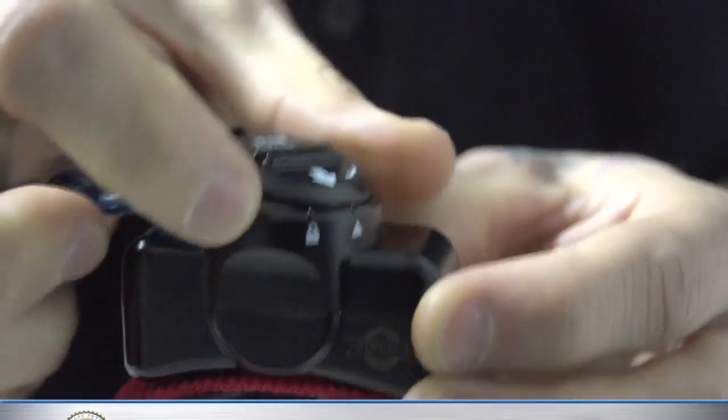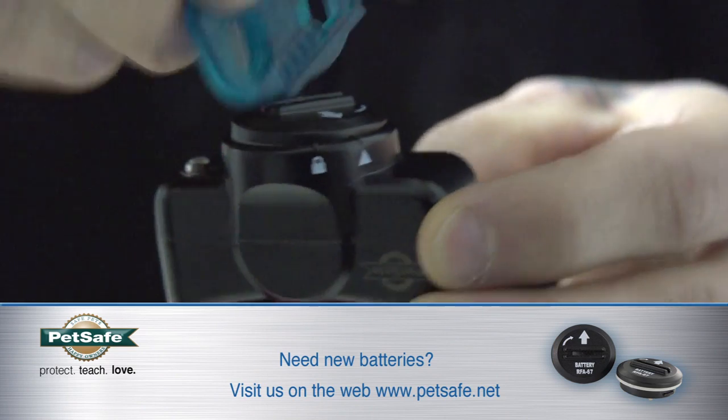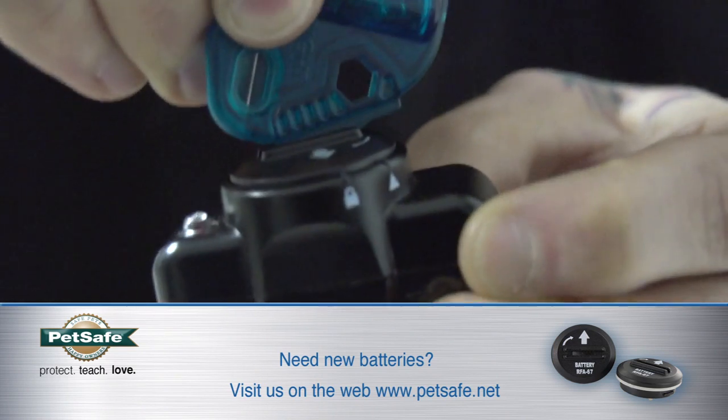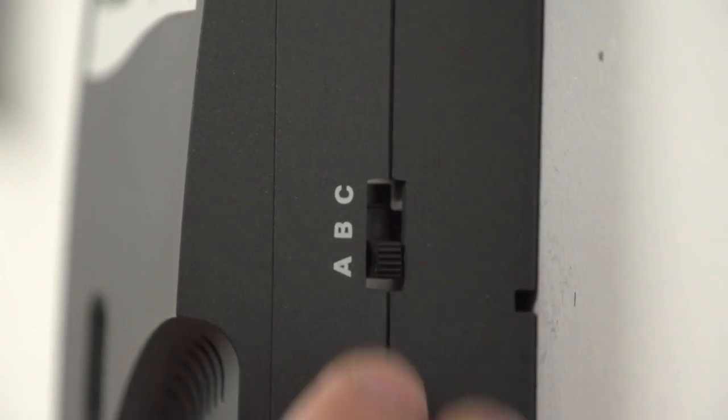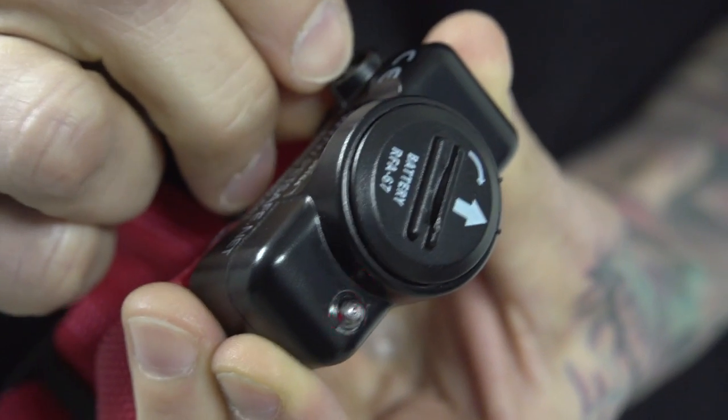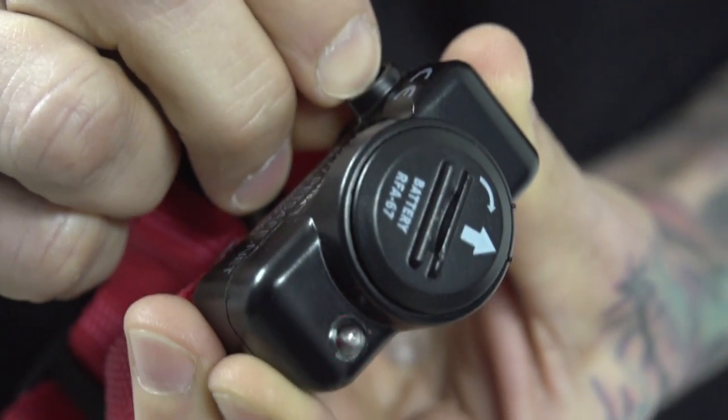Before you begin, remove the receiver collar from your dog and make sure a good battery is installed in the receiver collar. Set the boundary control switch to B and the receiver collar static correction level to 5.